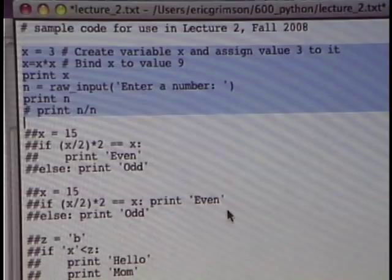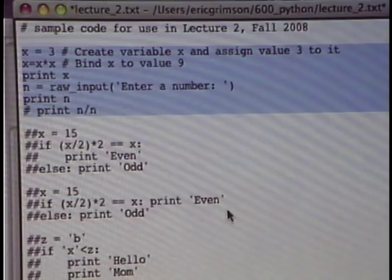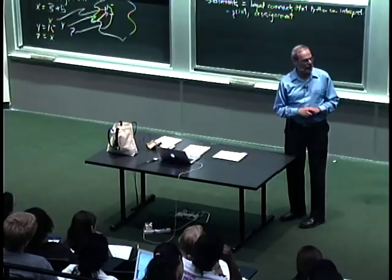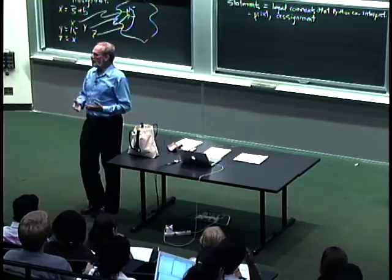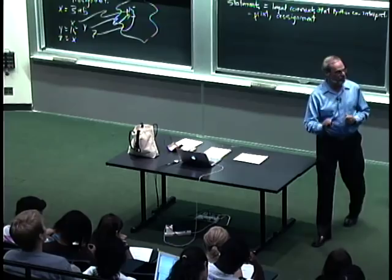Now, these particular comments are computationally challenged — why in the world do I tell the reader I'm binding x to the value three? I'm putting them in to make a point. In general, good programming style says you put in comments that are valuable in helping you as a reader understand what's going on inside the code — the intuition behind a piece of code, preconditions you want on input, explanations of specific things you're doing.